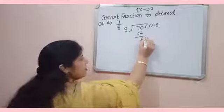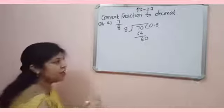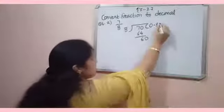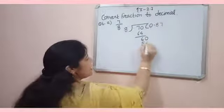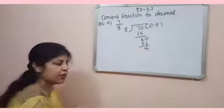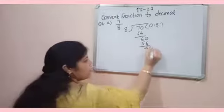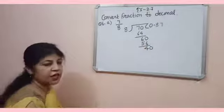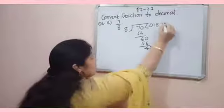So take one more 0 here. That is 60. Now, it will divide by 8, 7 times, that's 56. Now, 4. Now, 1 more 0. 40, 8, 5 times, that's 40.